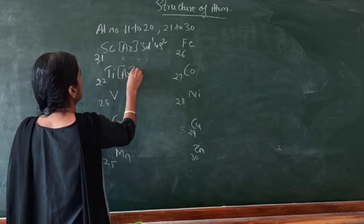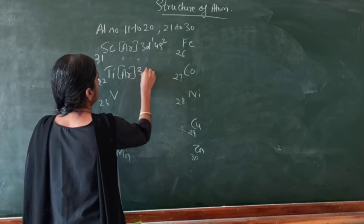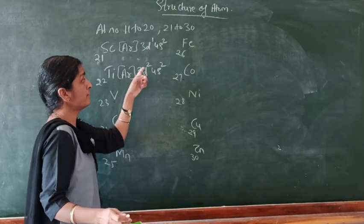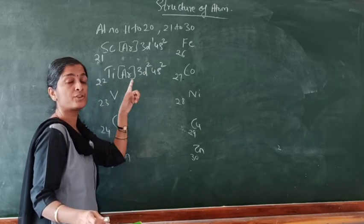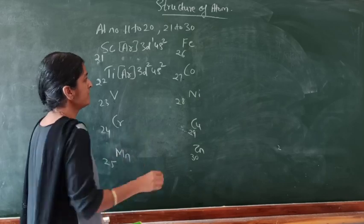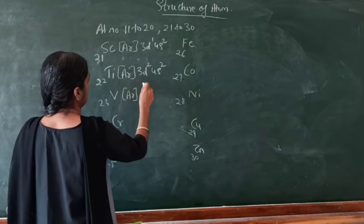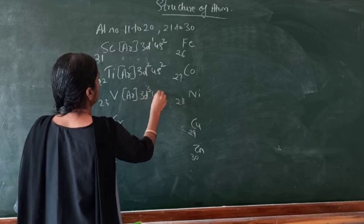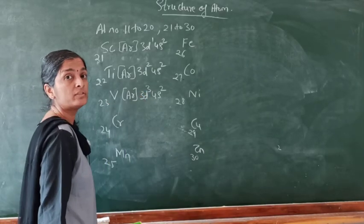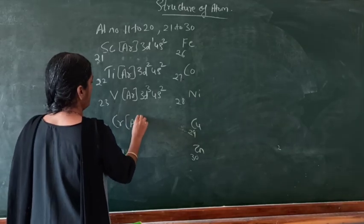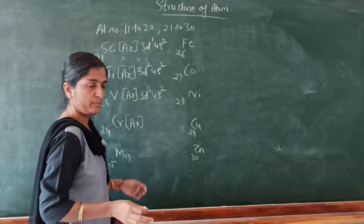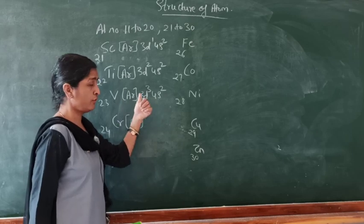After scandium and titanium, 4s is filled up — its capacity is over, so electrons go to the next d orbital. The capacity of d orbitals is 10 electrons because there are 5 d orbitals. So vanadium is [Ar] 3d³, 4s². The electrons go on getting added to the 3d orbital. Now, look here — you cannot write chromium as 3d⁴, 4s². That should have been the electronic configuration of chromium, but it is not. The actual configuration is 3d⁵, 4s¹.